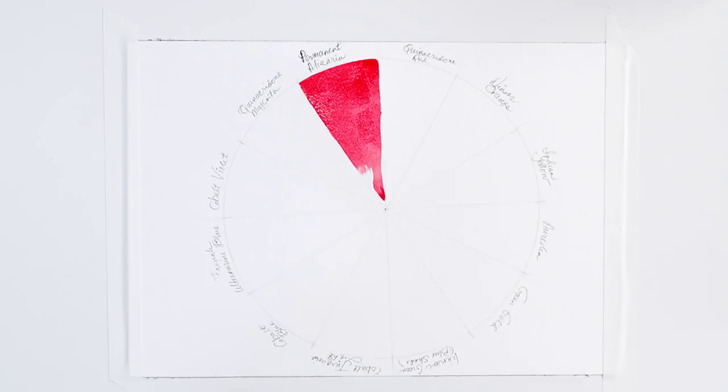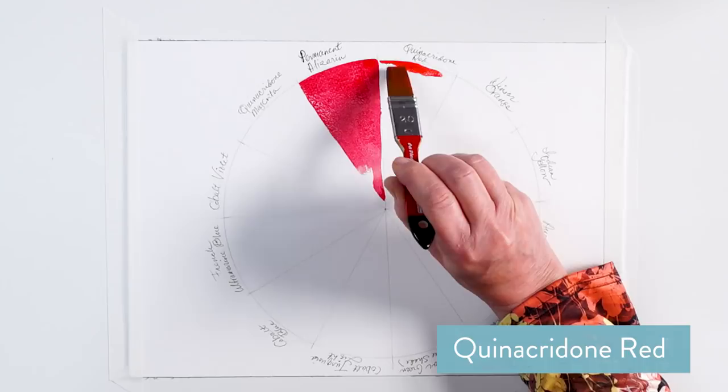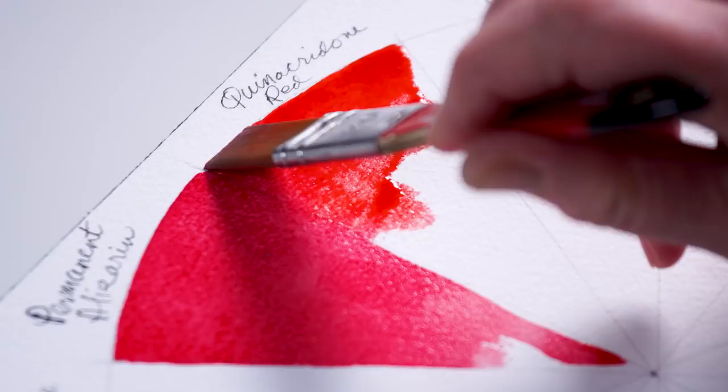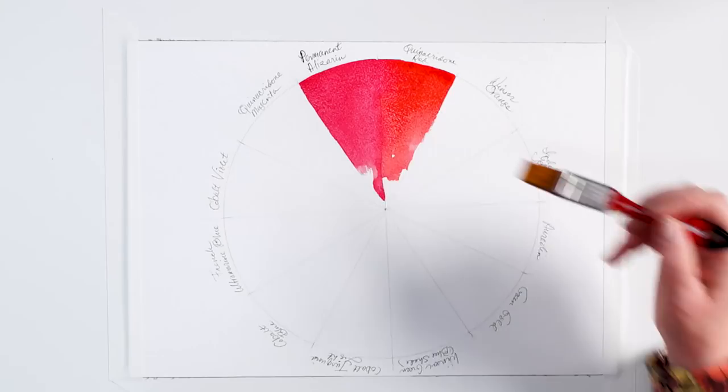After the permanent alizarin, we're going to go a little bit warmer to quinacridone red. I know that's a mouthful and a lot to remember, but you'll get used to it after a while. These are very transparent, very clear permanent colors, and look at how brilliant that red is.